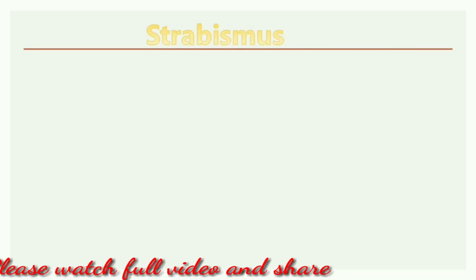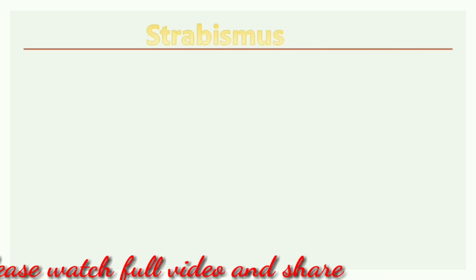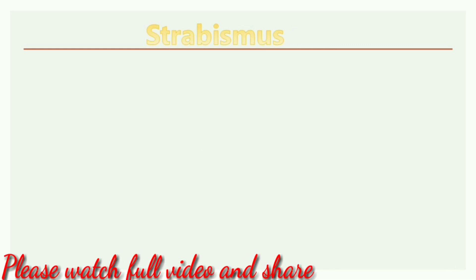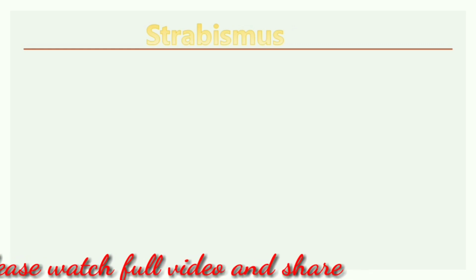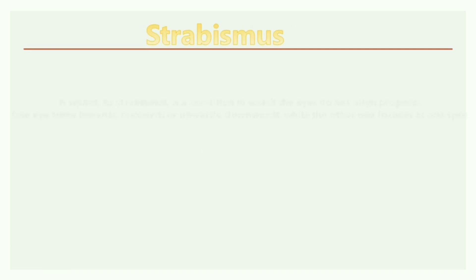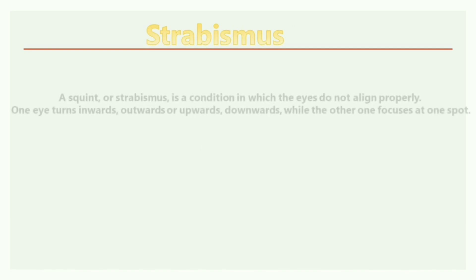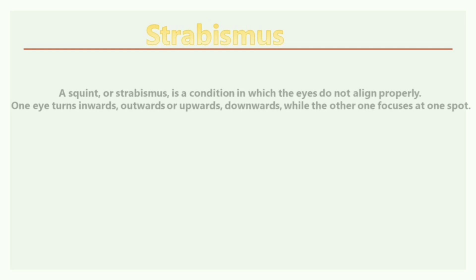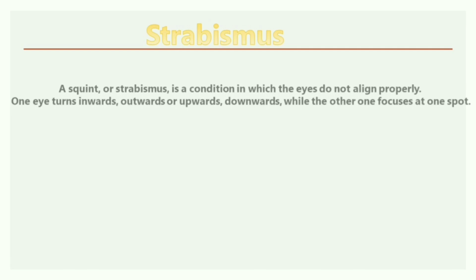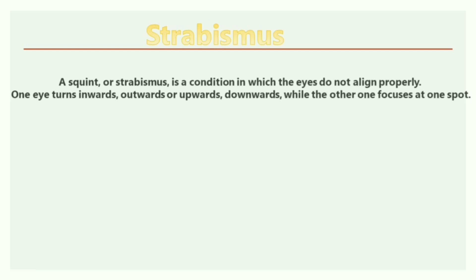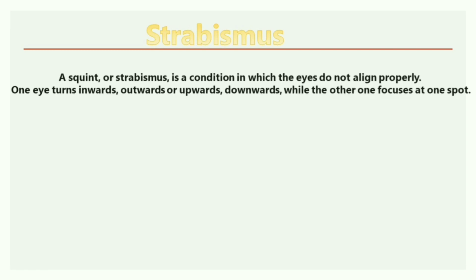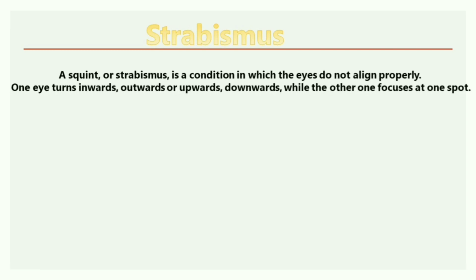Strabismus can occur at any age — sometimes even at birth — so early detection can help treat your eyes. The definition of strabismus is a condition in which the eyes do not align properly; one eye turns inward, outward, upward, or downward while the other eye focuses at one spot.